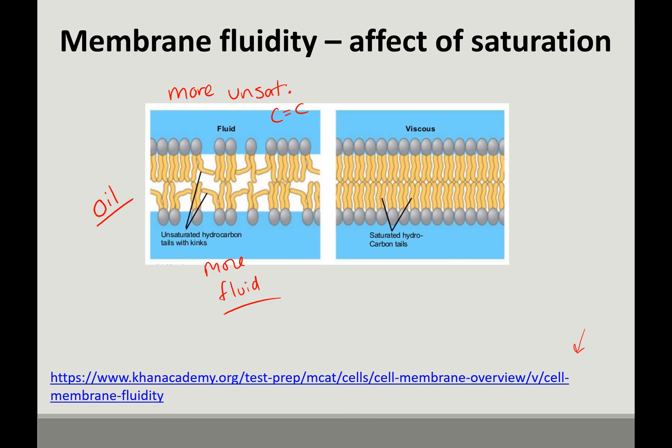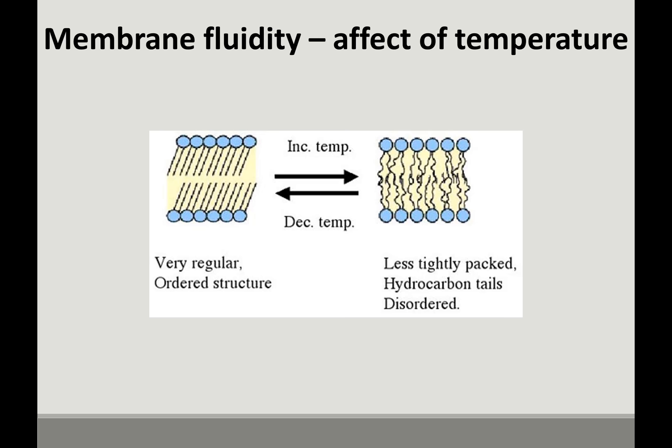These are like oils. Oils are liquid at room temperature because they have a lot of unsaturated fats. Whereas butter and margarine is full of saturated fats. They are less fluid. They can pack tighter together. That kind of makes sense.